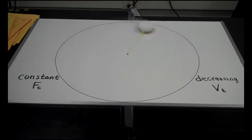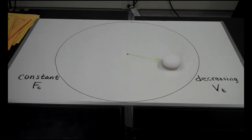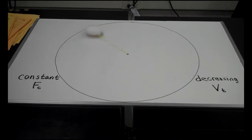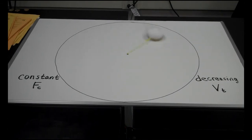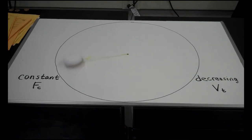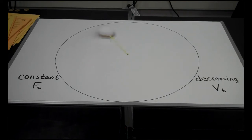Now watch as it spins. Even though the surface is very slippery for the dry ice puck, there is a small amount of friction, so eventually the puck begins to slow down. As the puck slows down, you'll notice the radius of the circle becomes smaller.